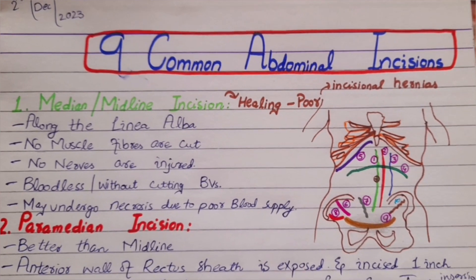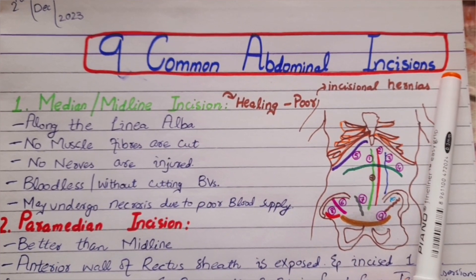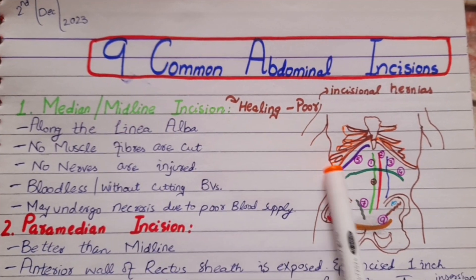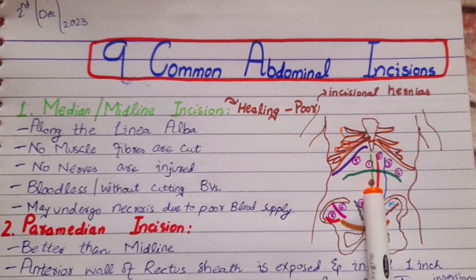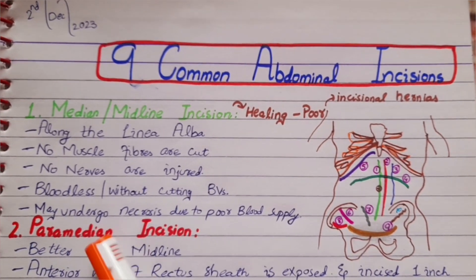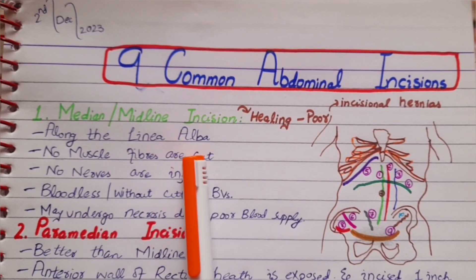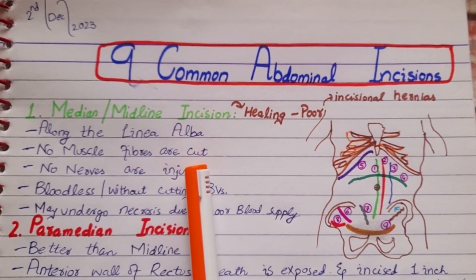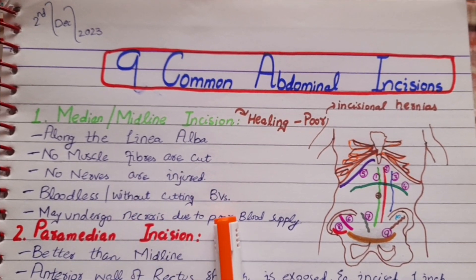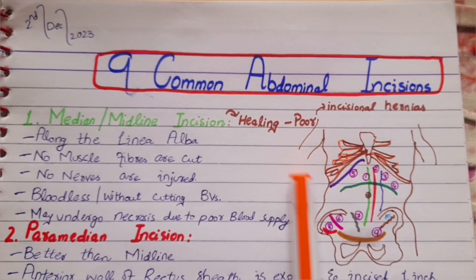In this video we will learn about the nine most common types of abdominal incisions. Number one is the median or midline incision, given along the linea alba. No muscle fibers are cut, no nerves are injured, and it is bloodless because no blood vessels are cut. However, it may undergo necrosis due to poor blood supply, healing is very poor, and incisional hernias can occur.